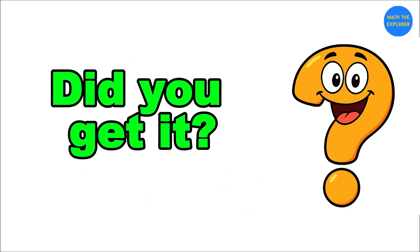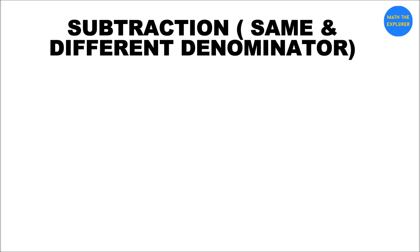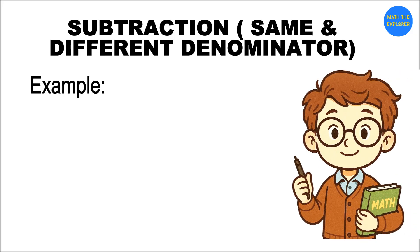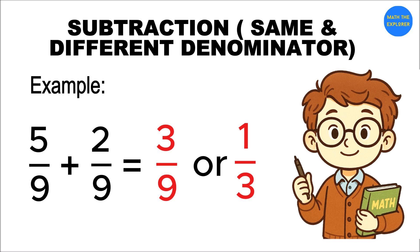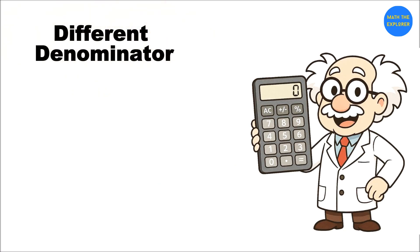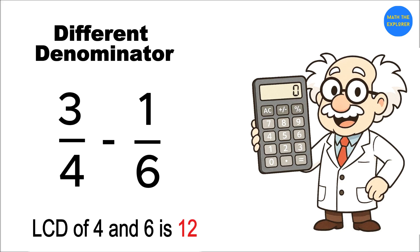Subtraction works the same way. Example with same denominator: 5/9 - 2/9 = 3/9, simplified to 1/3. Different denominator: let's try 3/4 - 1/6. Step one: LCD of 4 and 6 is 12. Step two: rewrite. 3/4 = 9/12 and 1/6 = 2/12.